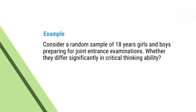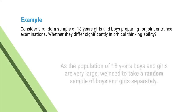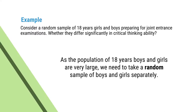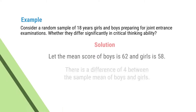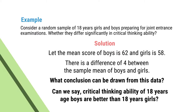Let us understand the whole concept with the help of an example. Consider a random sample of 18-year girls and 18-year boys preparing for joint entrance examinations. Whether they differ significantly in critical thinking ability. Since the population of 18-year boys and girls is very large, we need to make random samples separately. Let the mean score of boys be 62 and girls be 58 — there is a difference of 4 between the sample means.